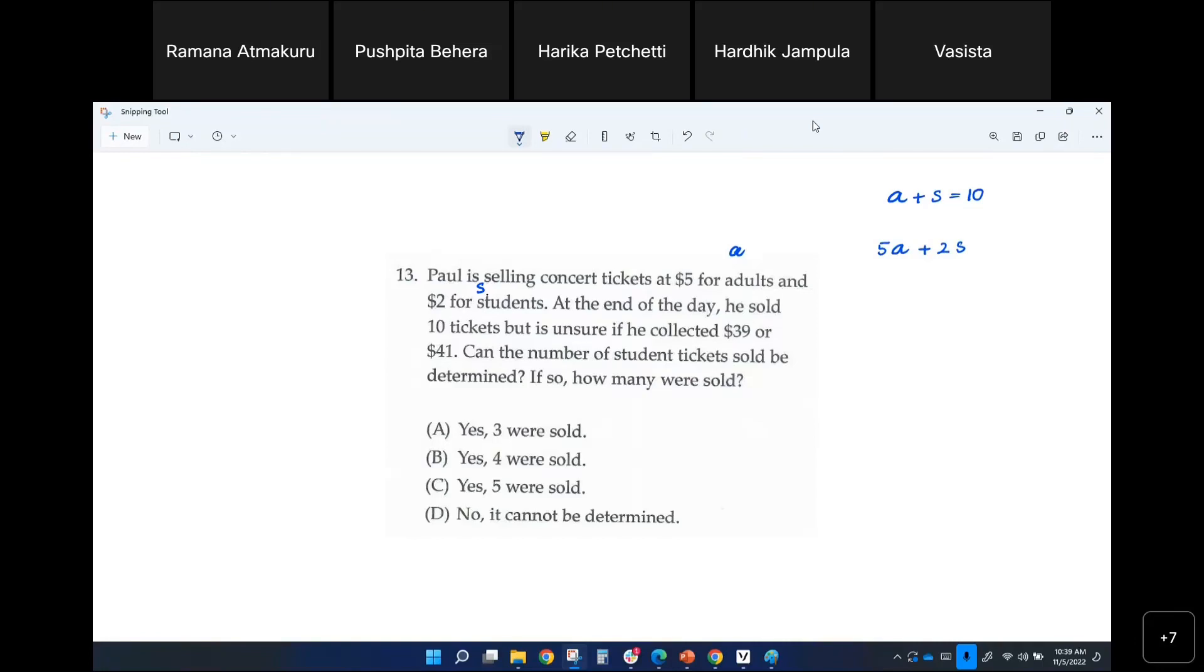But he is unsure if he collected either 39 or 41. He is unsure. Can the number of student tickets sold be determined? If so, how many were sold? So let's see.